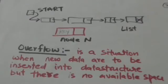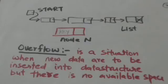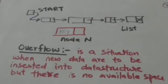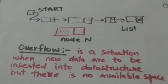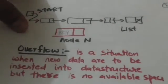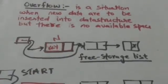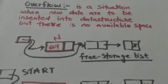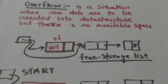If the free storage list is empty, it means there is no free space in memory. In this case the algorithm will print overflow. Overflow is a situation when new data are to be inserted into a data structure but there is no available space. If the free storage list is not empty, then its first node is removed.